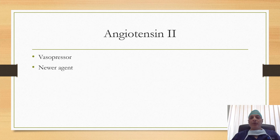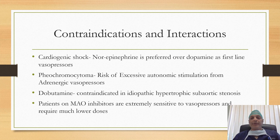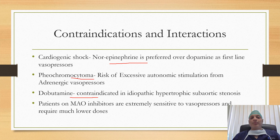Synthetic angiotensin-2 is a newer agent and it acts as a vasopressor through angiotensin receptors. In terms of contraindications: dopamine should not be used in patients with cardiogenic shock — norepinephrine should be preferred in such patients. Adrenergic vasopressors should not be used in patients with pheochromocytoma, and dobutamine is contraindicated in patients with idiopathic hypertrophic subaortic stenosis. Patients on monoamine oxidase inhibitors are extremely sensitive to vasopressors and require much lower doses.